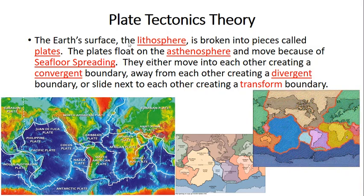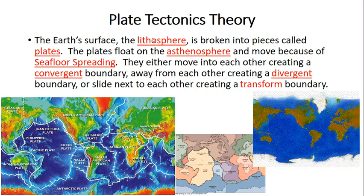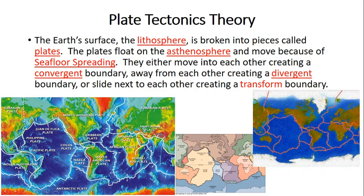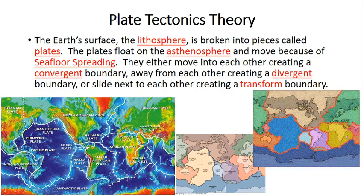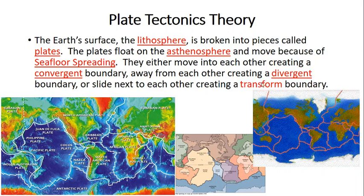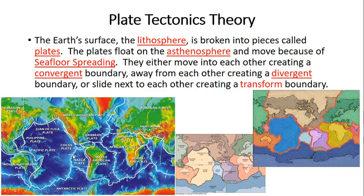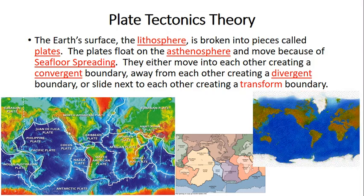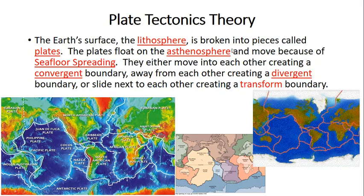Those underlined words in red are words that might be new to you — we will go over those in these quick couple of lessons. You see a couple of pictures here basically showing you the different plates of lithosphere. Think of lithosphere kind of like the crust: the North American plate, Pacific plate, Caribbean plate, Cocos plate. You can also see the boundaries — the lines with different arrows indicating whether it's a divergent, convergent, or transform boundary. We'll go over all that a little bit later.